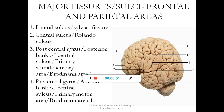Welcome back to my channel. Today we are going to be discussing an anatomy of the brain demonstration. This is the lateral part of the brain, and we are seeing the lobes of the brain. So this is the frontal lobe, the temporal lobe, the occipital lobe, and the parietal lobe.